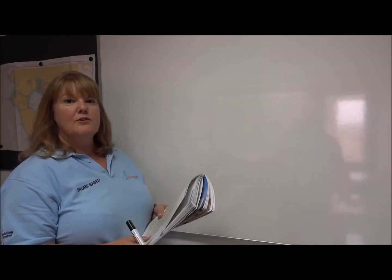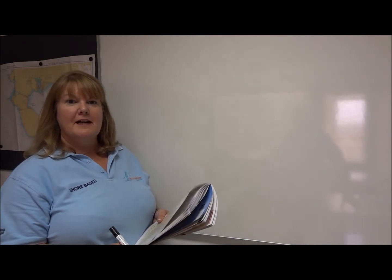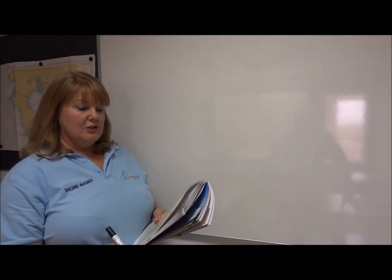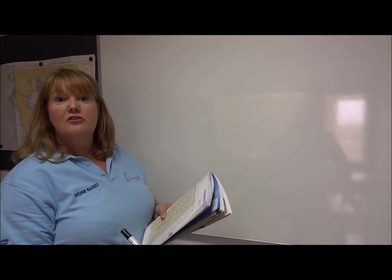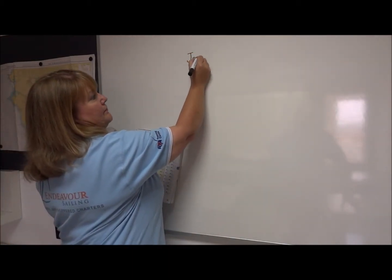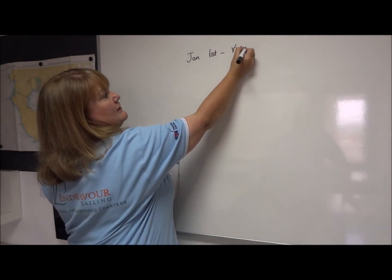Now let's look at a few working examples and we'll use this based on the data found in the RYA training almanac. And let's use just for an example Port Victoria. And we'll start off with the first one in the book, January the 1st. So January the 1st and we're looking at Port Victoria.